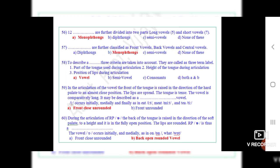Question number 60: During the articulation of received pronunciation, the back of the tongue section is raised in the direction of the soft palate to a height and it is in the fully open position. The lips are rounded. Received pronunciation R is thus a dot dot dot. The correct option is B, back open rounded vowel.